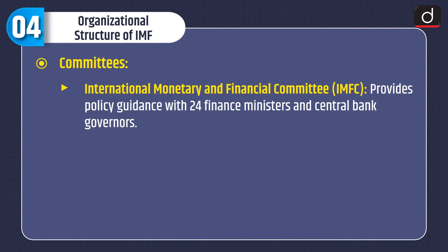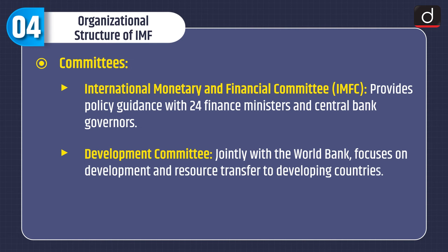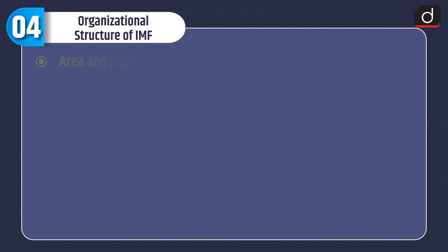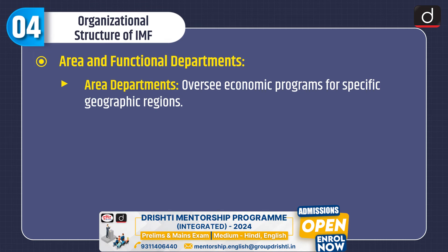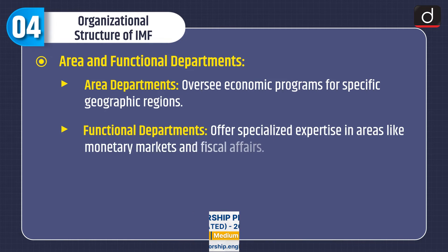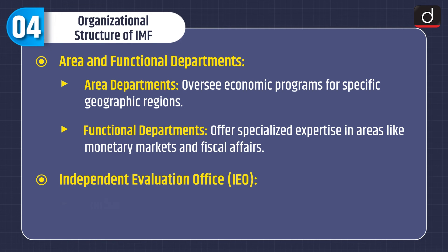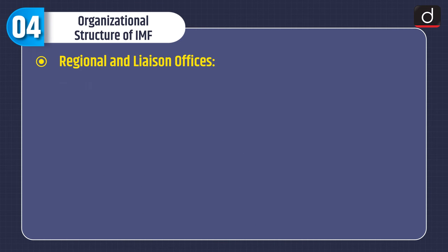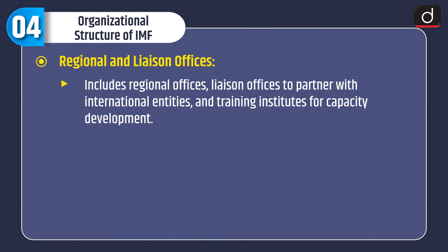Third is Committees: the International Monetary and Financial Committee provides policy guidance with 24 finance ministers and central bank governors. The Development Committee, jointly with the World Bank, focuses on development and resource transfer to developing countries, and various other specialized committees exist for specific issues. Fourth is Area and Functional Departments: area departments oversee economic programs for specific geographic regions, and functional departments offer specialized expertise in areas like monetary markets and fiscal affairs. The Independent Evaluation Office conducts objective evaluations of IMF's policies and activities, operating independently from IMF management. Regional and Liaison offices partner with international entities and training institutes for capacity development.